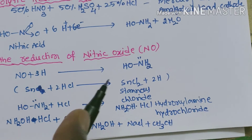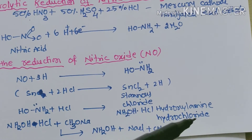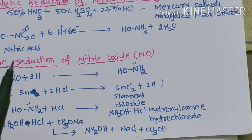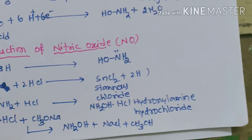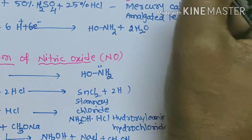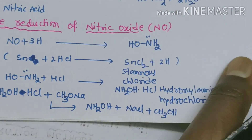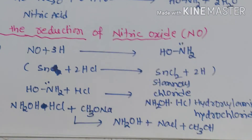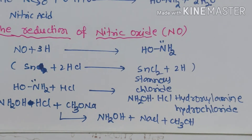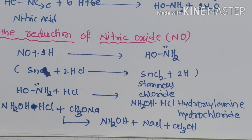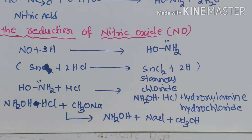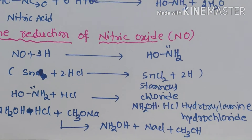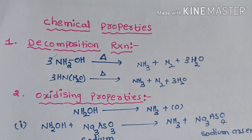We get hydroxylamine as a salt known as hydroxylamine hydrochloride. The tin used in this reaction is removed by passing H₂S gas; H₂S reacts with stannous chloride and the tin is precipitated as tin sulfide. Next, the hydroxylamine hydrochloride is treated with sodium methoxide, so hydroxylamine separates out and we get sodium chloride and methyl alcohol. Sodium chloride is removed by filtration and methyl alcohol by distillation.